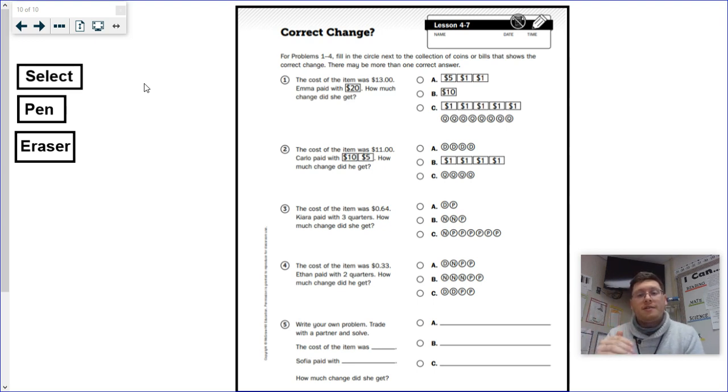You have to go through A, B, and C and make sure that it's not just one answer. So let's look at number one. It says the cost of the item was $13. Emma paid with $20. How much change did she get? So I need to take the price of what I paid with, which is $20, and then I have to subtract how much money the items were, which was $13.